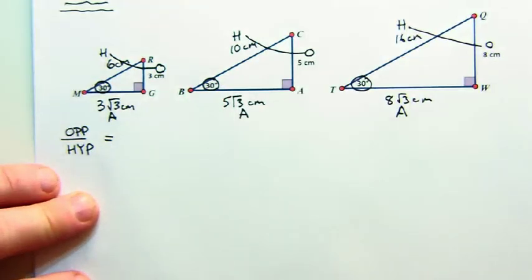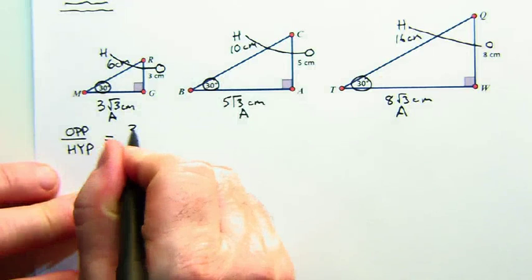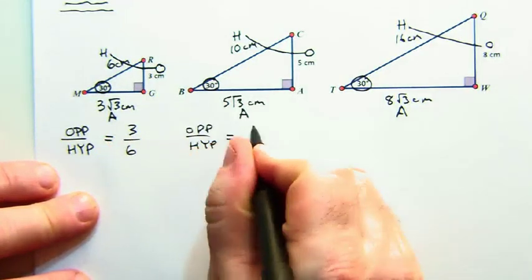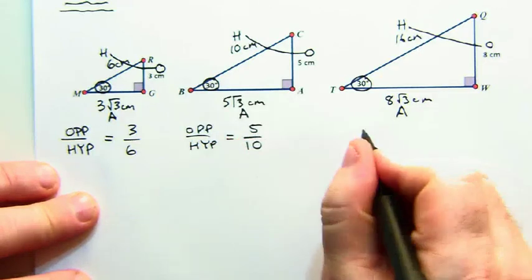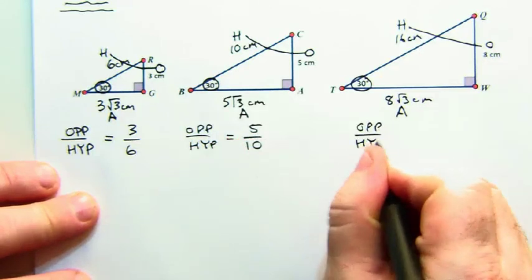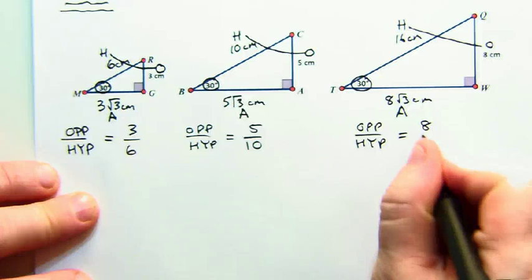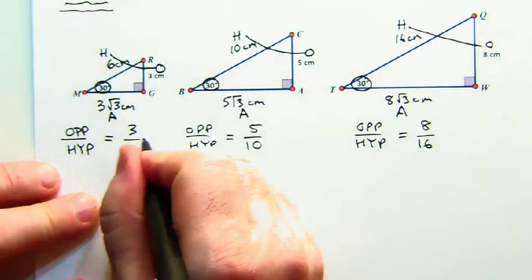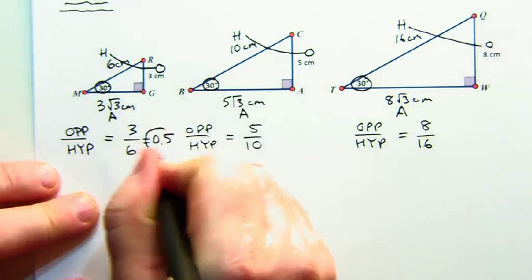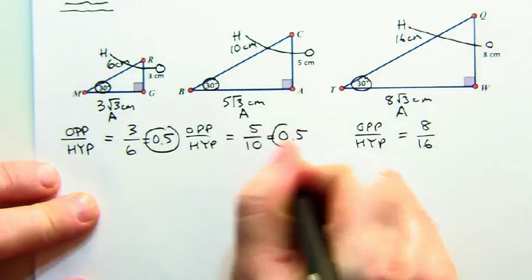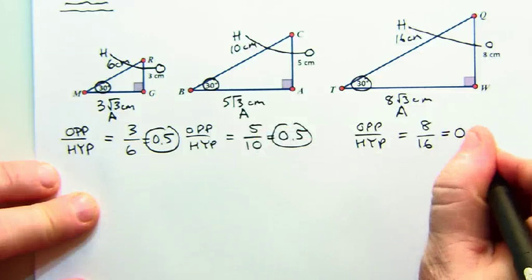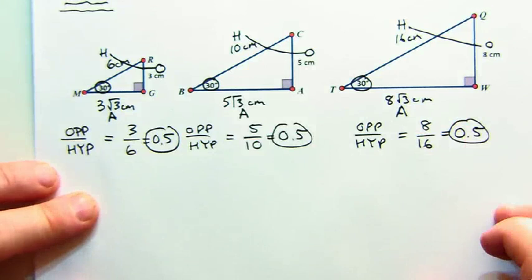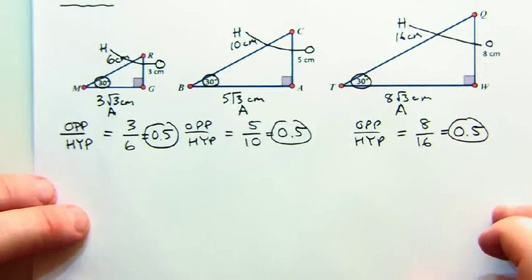And it works out to be very nice. It's a 3 to 6 in this case. Opposite to hypotenuse here works out to be 5 to 10. And opposite to hypotenuse here works out to be 8 to 16. Now you can see, just as I can, that these are all equal to 0.5. So the ratio of the opposite side to the hypotenuse side in a 30 degree right triangle will always be a half. That's nothing new. That's special right triangle ratios.